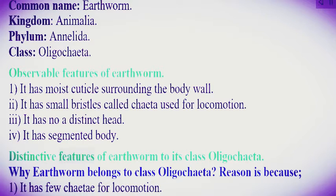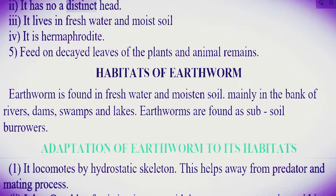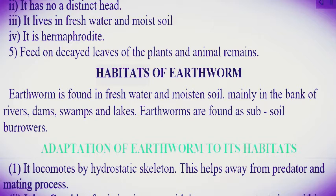Distinctive features of earthworm to its class Oligochaeta. Why does the earthworm belong to class Oligochaeta? Because: one, it has few chaetae for locomotion; two, it has no distinct head; three, it lives in fresh water and moist soil; four, it is hermaphrodite; five, it feeds on decayed leaves of plants and animal remains.